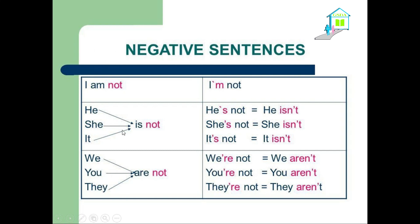This is called the full form. I am not. He is not, or he isn't. She is not, or she isn't. It is not, it's not, or it isn't. We are not, we're not, or we aren't — and so on. This column has the full form, and this one has the short form.